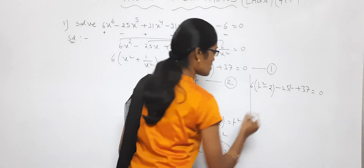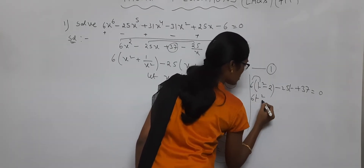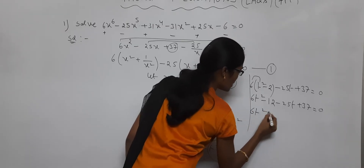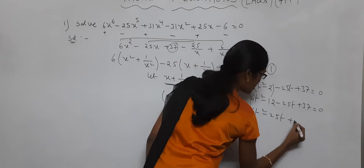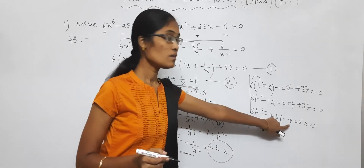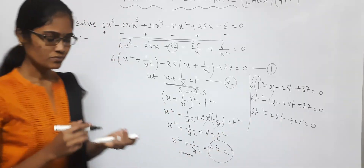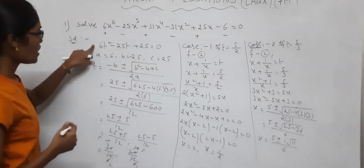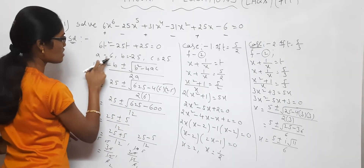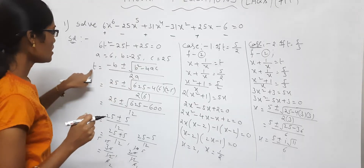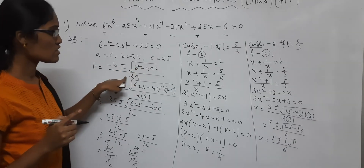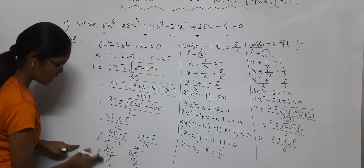Solving this: 6t square minus 12 minus 25t plus 37 equals 0, giving 6t square minus 25t plus 25 equals 0. With a equals 6, b equals minus 25, c equals 25, applying the quadratic formula: minus b plus or minus square root of b square minus 4ac, divided by 2a. We get t values of 5 by 2 and 5 by 3.